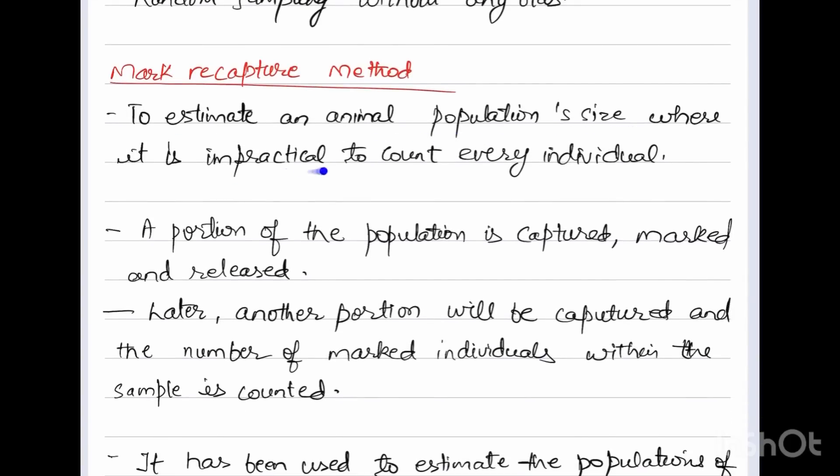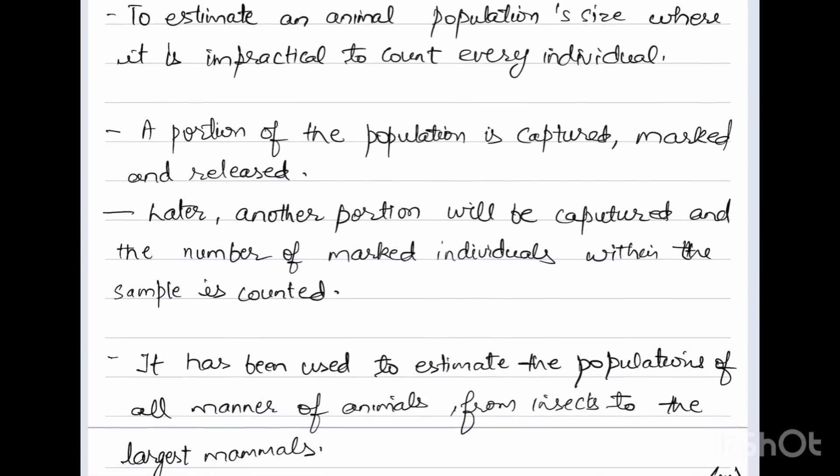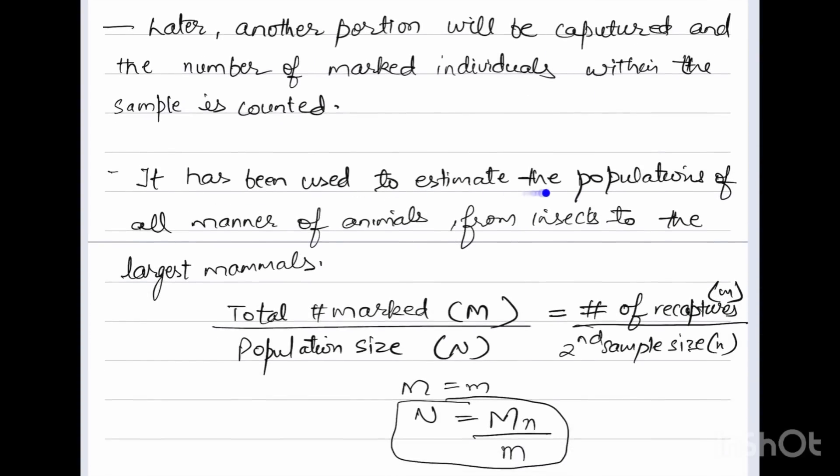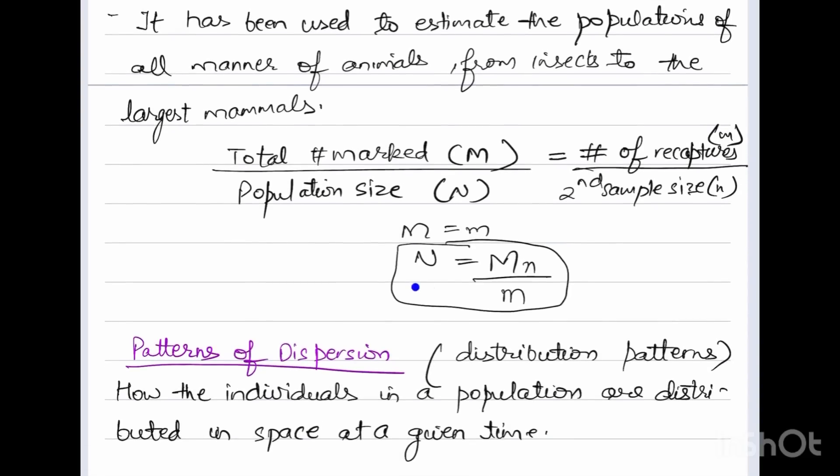Mark-recapture method is used to estimate an animal population size where it is impractical to count every individual. A portion of the population is captured, marked, and released. Later another portion is captured, marked, and released. It has been used to estimate the population of all manner of animals from insects to the largest mammals. The formula is: total marked (M) over population size (N) equals number of recaptures over second sample size, and the formula is N equals M times n over m.